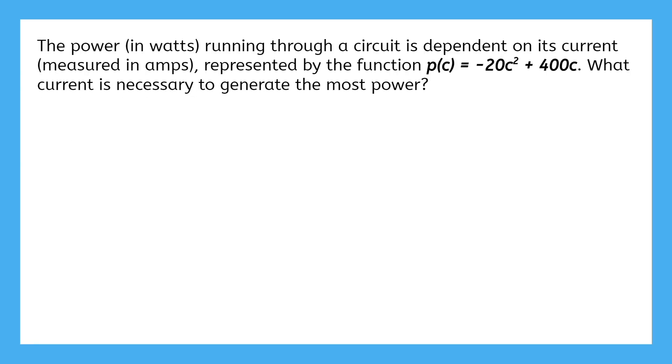The power in watts running through a circuit is dependent on its current, measured in amps, represented by the function p(c) = -20c² + 400c. What current is necessary to generate the most power?